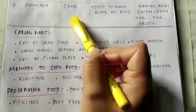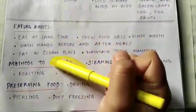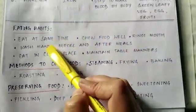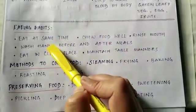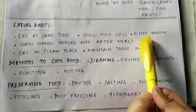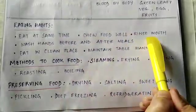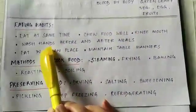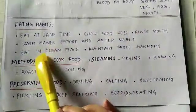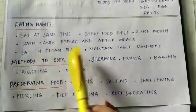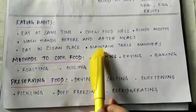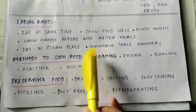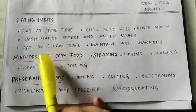There are certain eating habits you need to follow: eat at the same time daily, chew food well, rinse your mouth properly after meals, wash your hands before and after meals, eat in a clean place, and maintain table manners.